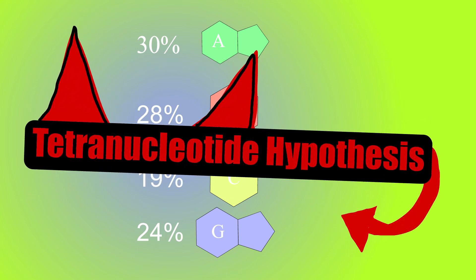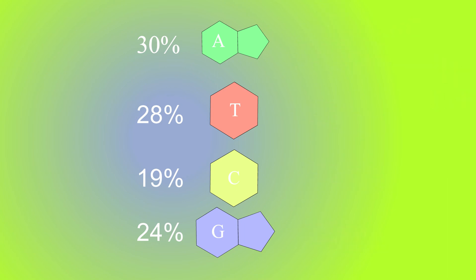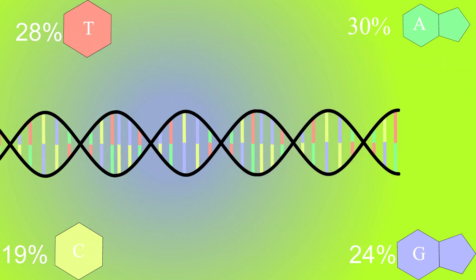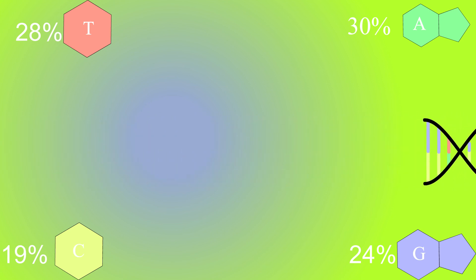So what were the results? How much of each base was there? Well, 30% A, 28% T, 19% C, and 24% G. This is very different to the results expected under the tetranucleotide hypothesis, where each base should be about 25%. These results showed that the hypothesis that had shaped our understanding of DNA for over 30 years was seemingly disproven, giving good chemical evidence for the complexity of DNA. The implications of this cannot be understated.